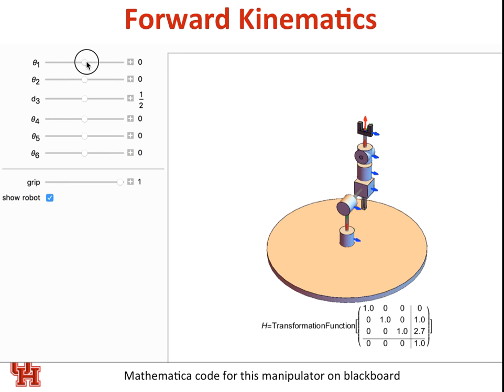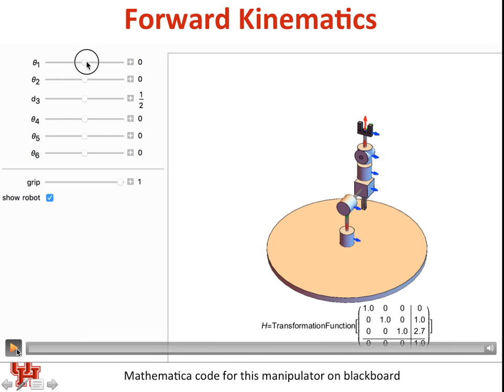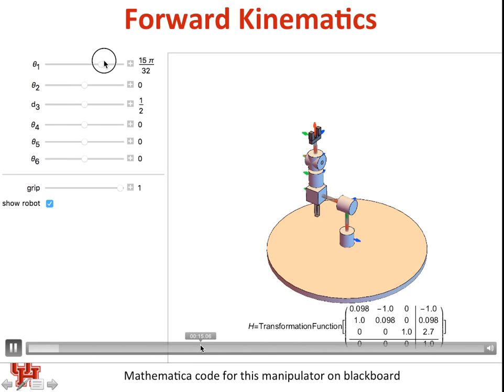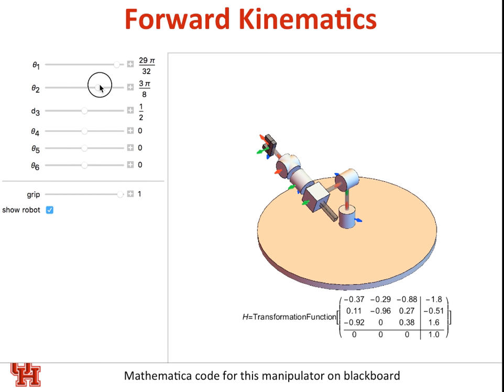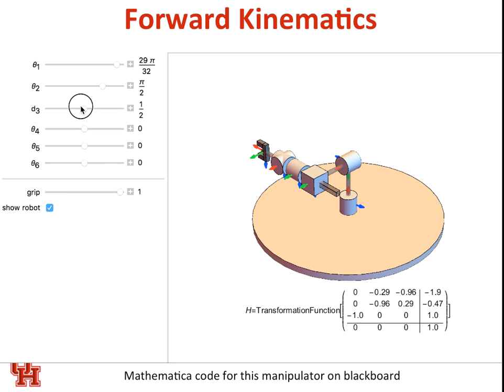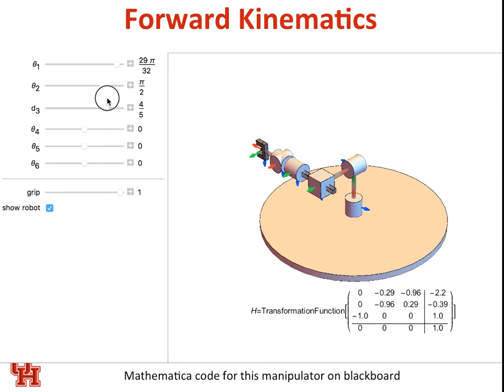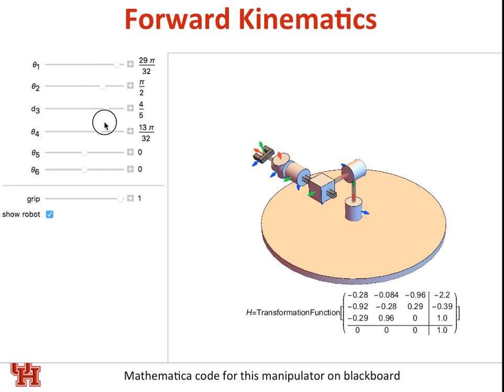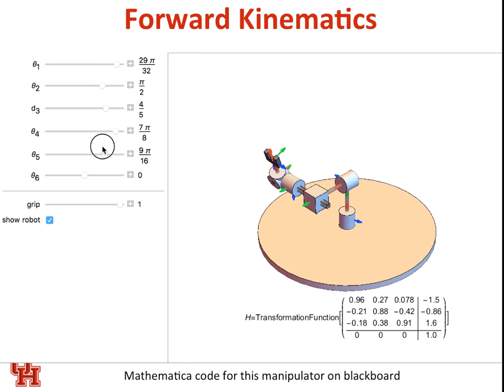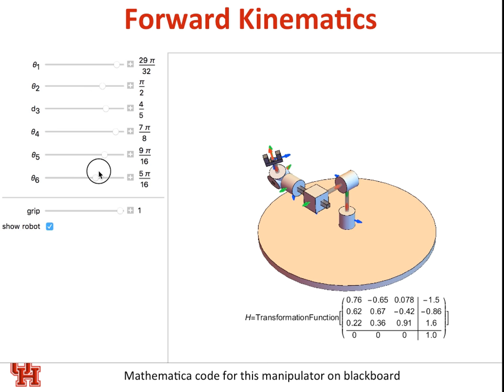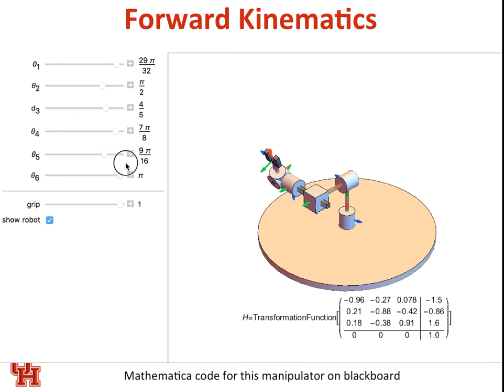So here is an example of the Stanford Manipulator. Here's a video we made in our Robotica program. The Stanford Manipulator has six joints, and so it's got a waist joint that you can rotate. Then you can also close the gripper. That's not really a degree of freedom 7.